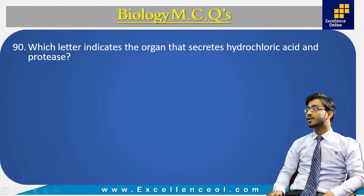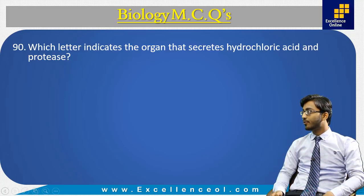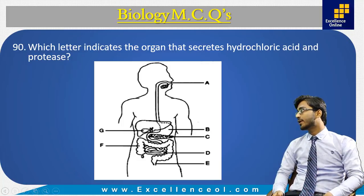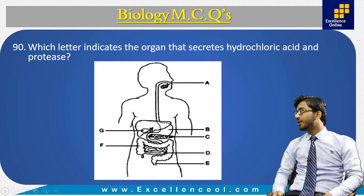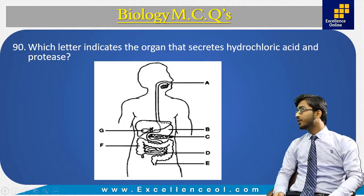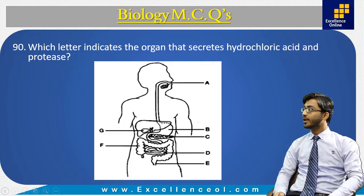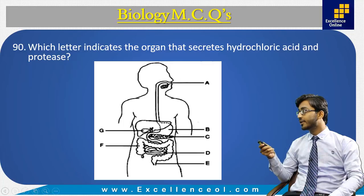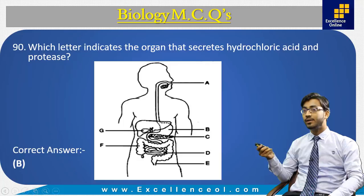Next MCQ: which letter indicates the organ that secretes hydrochloric acid and protease? The digestive tract diagram shows: A — oral cavity, B — stomach, C — pancreas, D — small intestine, F — large intestine, G — gallbladder, E — anus. Hydrochloric acid and protease (pepsin) are secreted from the stomach, from the gastric glands. The letter indicating the stomach is B. So the correct answer is B.